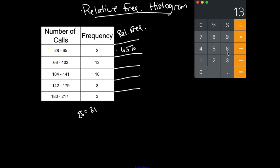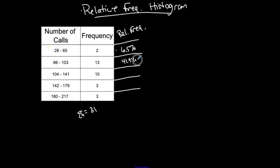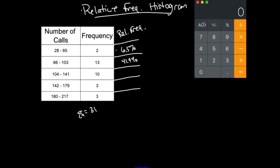13 out of 31, my 41.9, rounded to the nearest tenth of a percent. 41.9%. So I'm using percents for my relative frequency here. Sometimes you're asked for decimals. I like percents.